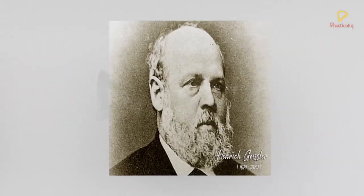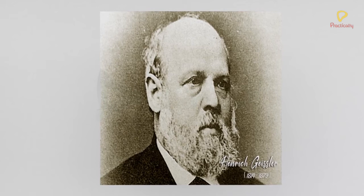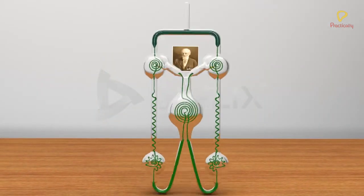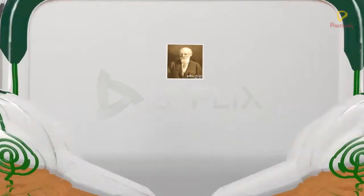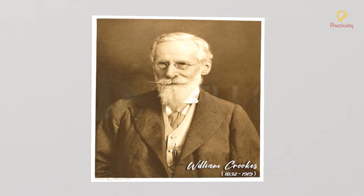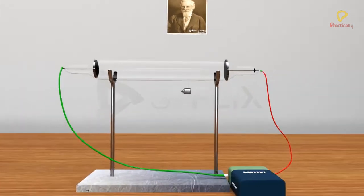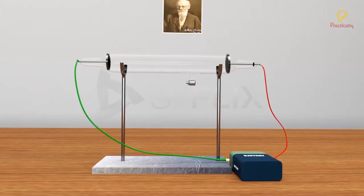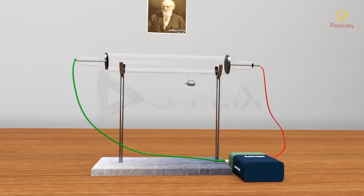Heinrich Geissler, a German inventor, developed the mercury pump and produced the first good vacuum tube. This tube, after being modified by Sir William Crookes, became the first of its kind to produce cathode rays, leading eventually to the discovery of the electron.